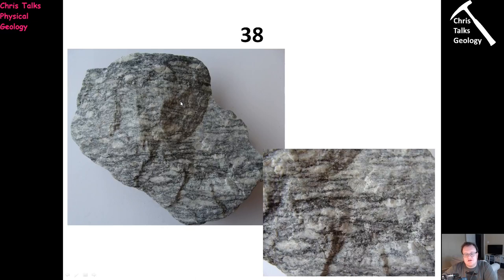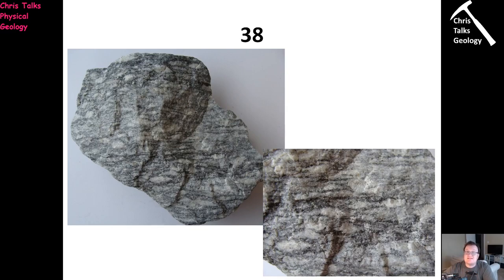On to sample 38. Is this rock foliated or non-foliated? You can probably see layers in it — let's see what you write down. So if it is foliated, what kind of foliation is it? Looking at this rock, we can see it looks kind of zebra-esque — it has lighter bands and darker bands. So that's going to help you begin to work out what type of rock it might be and therefore what type of foliation it has.